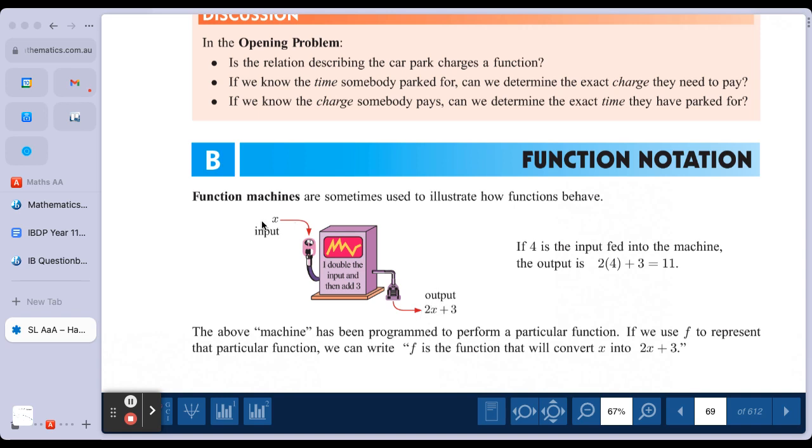So if I feed in a specific number like 0, 0 goes into the machine, 0 is doubled to 0, and then 3 is added, out would come 3. So an input-output machine. And we'll look at that in a little bit more detail next week, but it's kind of useful to think of a function like a machine and the machine operates according to a certain rule.